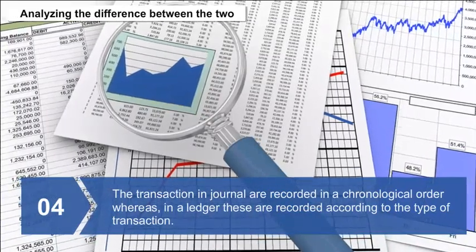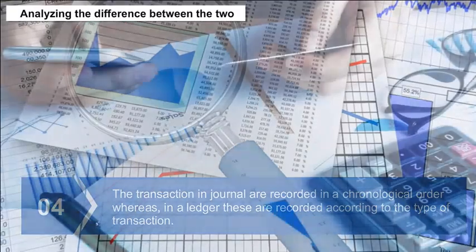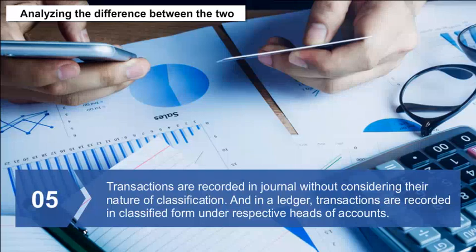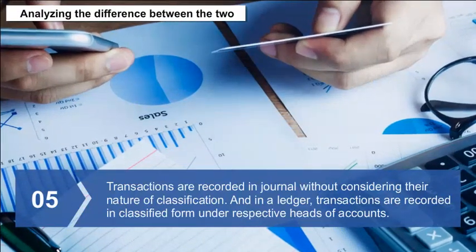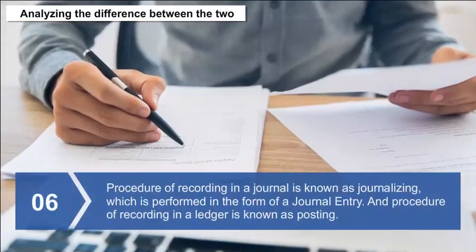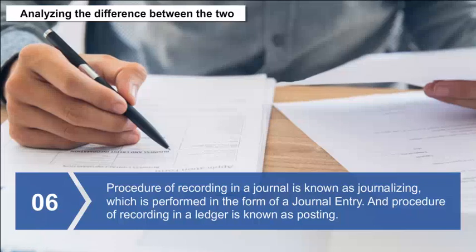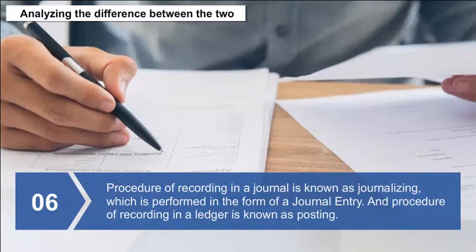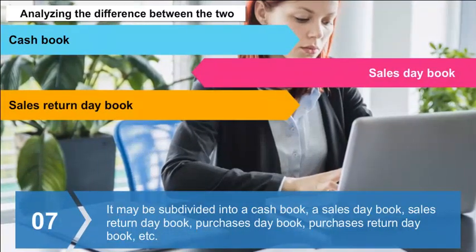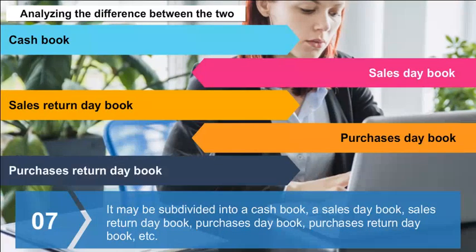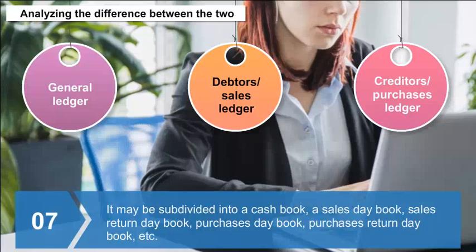(4) Transactions are recorded in a journal in chronological order, whereas in a ledger they are recorded according to the type of transaction. (5) Transactions are recorded in journal without considering their nature of classification; in a ledger they are recorded in classified form under respective heads of accounts. (6) The procedure of recording in a journal is known as journalizing, performed in the form of a journal entry; recording in a ledger is known as posting. (7) A journal may be subdivided into a cash book, sales day book, sales return day book, purchases day book, purchases return book, etc. (8) A ledger may be subdivided into general ledger, debtors or sales ledger, and creditors or purchases ledger.